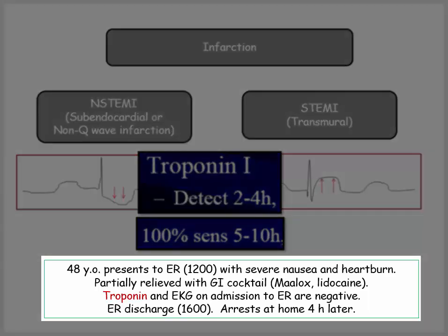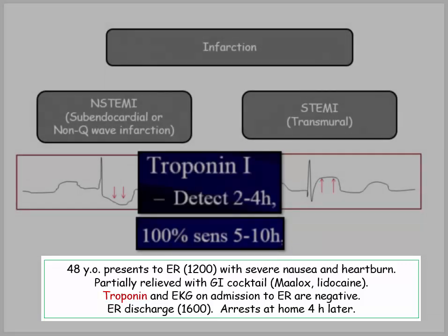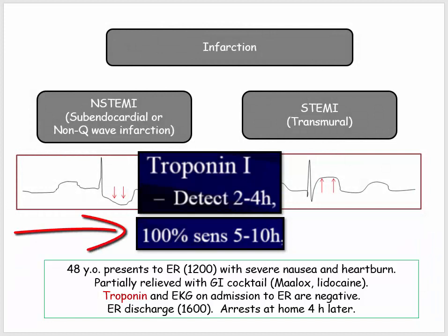Unfortunately, this story is too common: a young man presents to the ER with GI symptoms. The symptoms partially resolve with antacids. Initial troponin and EKG are negative. He is discharged after four hours in the ER and experiences a fatal arrest later that evening. This story is still too commonplace even in this era of medical discovery. The peak sensitivity of troponin is in the 5-10 hour range — a patient is not ruled out for myocardial injury at four hours. This is a life lesson in medicine, not just a USMLE lesson.